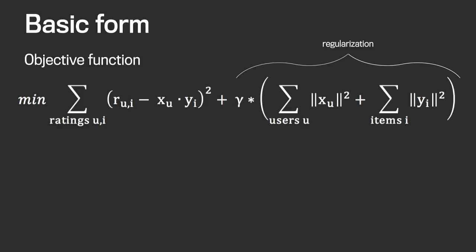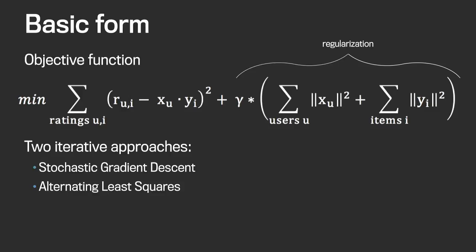There are a few iterative approaches to solving this. The two most common are stochastic gradient descent and alternating least squares. Stochastic gradient descent goes through each rating and moves both user and item feature vectors slightly in the direction of gradients to get a smaller error on that rating. Alternating least squares alternates between updating user feature vectors and item feature vectors — in one iteration the item feature vectors are fixed and it finds the best user feature vectors, then they switch roles.